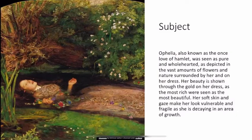Ophelia, also known as the once-love of Hamlet, was seen as pure and wholehearted, as depicted in the vast amounts of flowers and nature surrounding her and on her dress. Her beauty is shown through the gold on her dress, as the most rich were seen as the most beautiful. Her soft skin and gaze make her look more vulnerable and fragile as she is decaying in an area of growth.